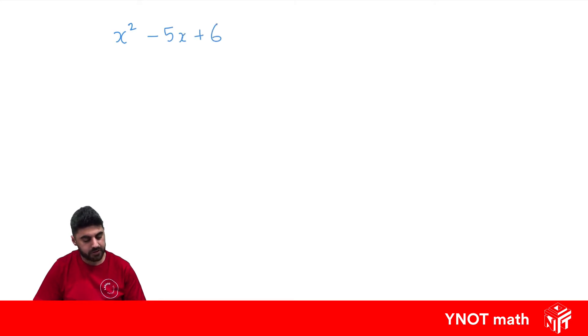It's a quadratic because the highest power of our pronumeral is 2, and it's monic because the coefficient of that highest pronumeral is 1.